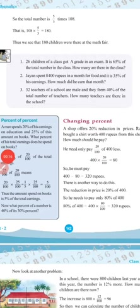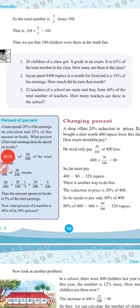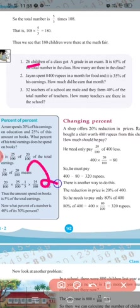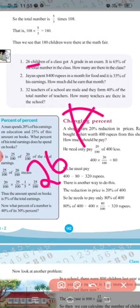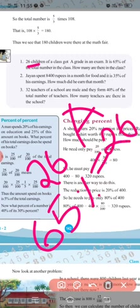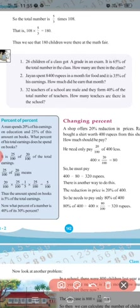Let us do the problems on page number 142. First problem: 26 children of the class got A grade in an exam. This is 65 percentage of the number in the class. How many are there in the class? Total number we need to find.